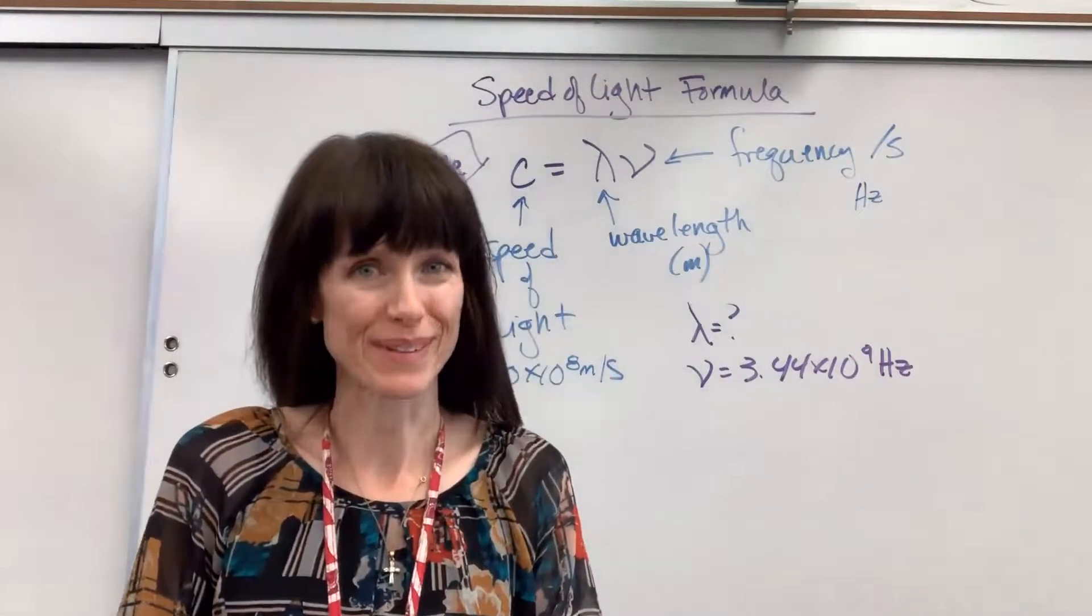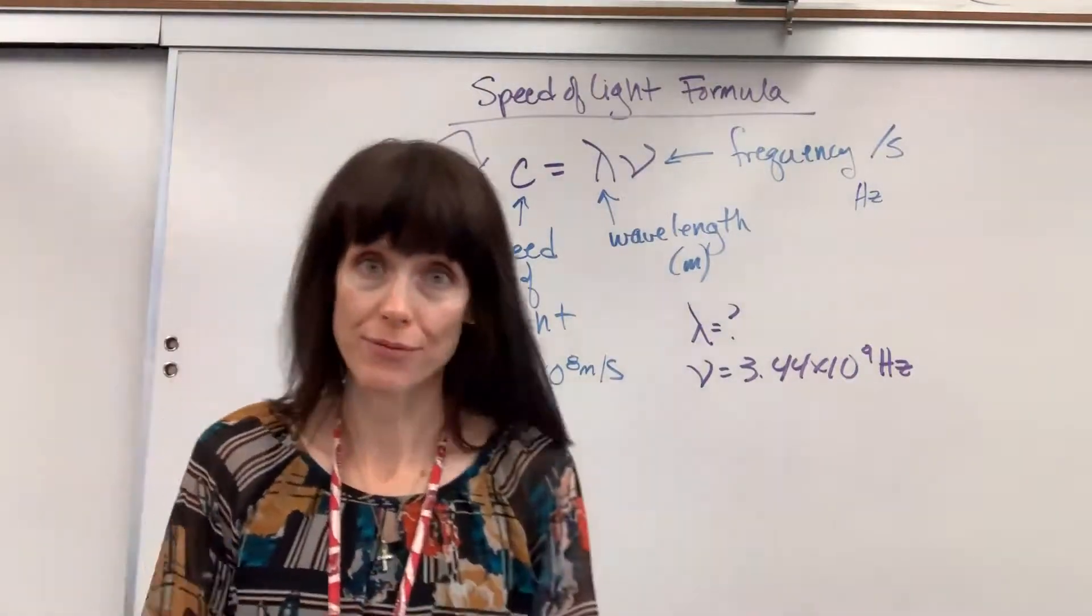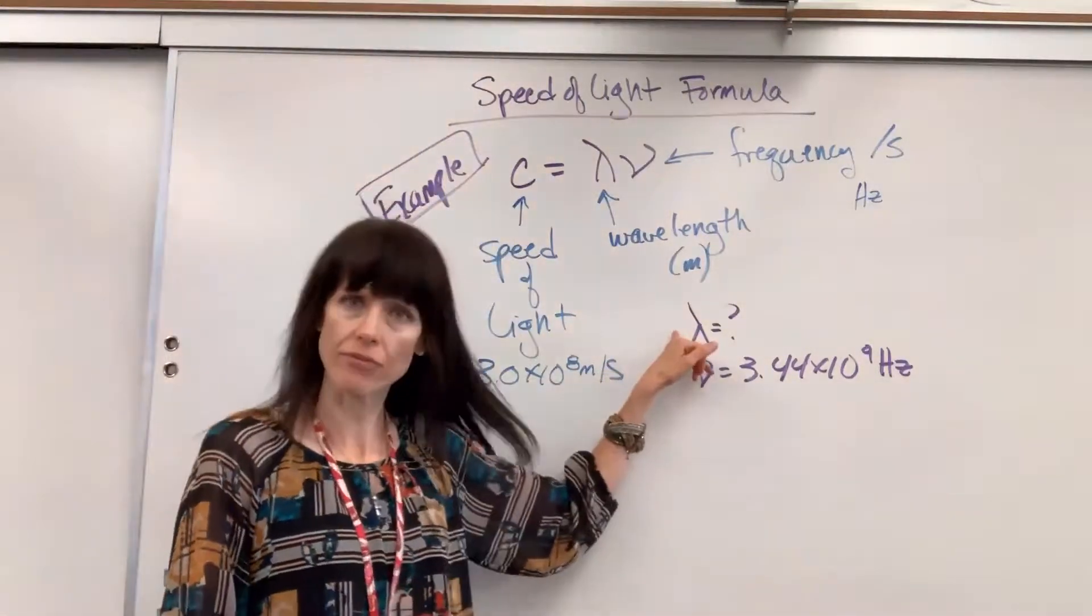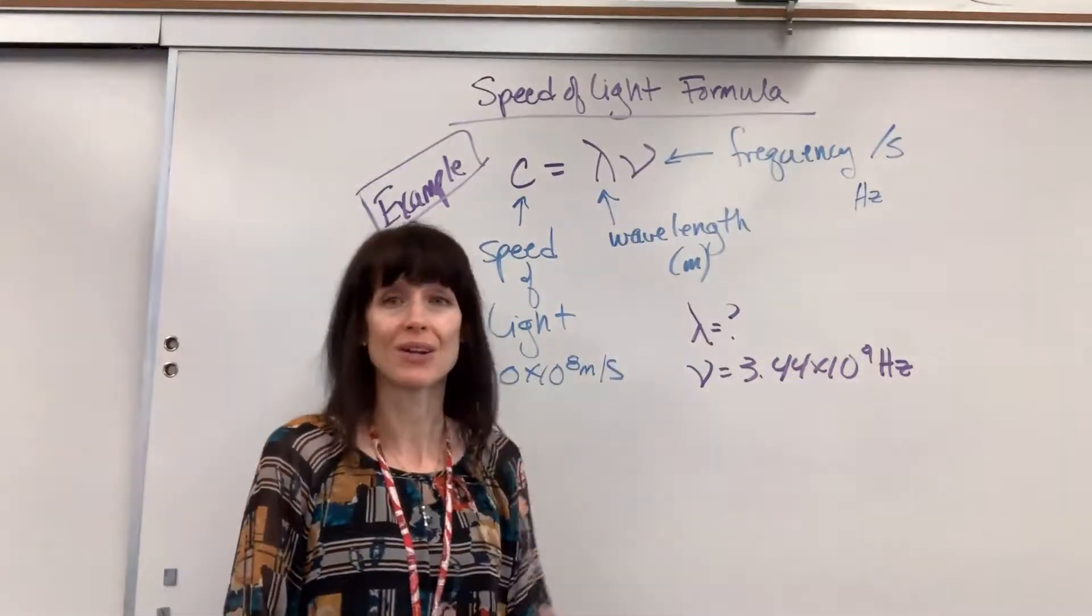Now we're going to do an example using our speed of light formula. So here it is. We have a microwave, and we want to know what's the wavelength of this microwave if it has a frequency of 3.44 times 10 to the 9 hertz.